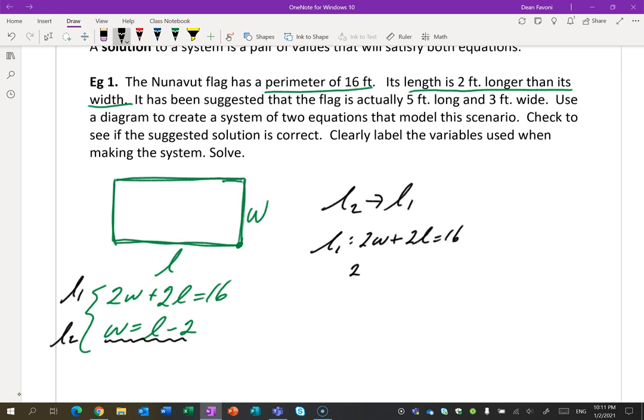I'm going to use substitution. Line 2 has already solved for W. I'm going to put 2 into 1. So what's line 1? It's 2W plus 2L equals 16. So it's 2 times, now it's not W anymore, it's L minus 2, plus 2L equals 16. Now work this out. 2L minus 4 plus 2L is 16. 4L is 20. So L is 5.